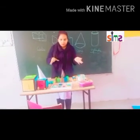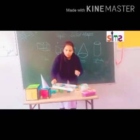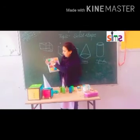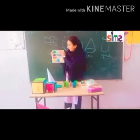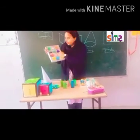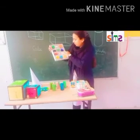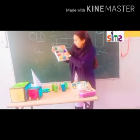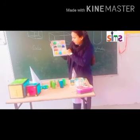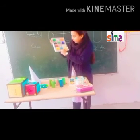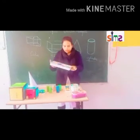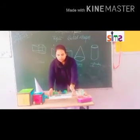So these are the examples of solid shapes. Let's revise once again: circle, star, square, semicircle, triangle, trapezium, oval, diamond, rectangle, pentagon, hexagon, and octagon. So here, these are the shapes — solid shapes.